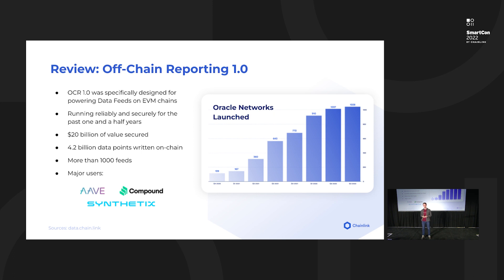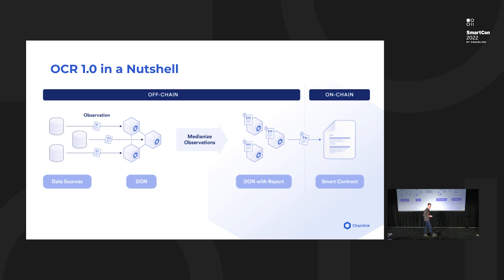Since the beginning of 2021, where we had something like 300 data feeds, we have more than tripled the number of networks launched. It's also a cornerstone for the DeFi ecosystem — major DeFi protocols such as Aave, Compound, and Synthetix rely on these data feeds powered by OCR 1 for their security.